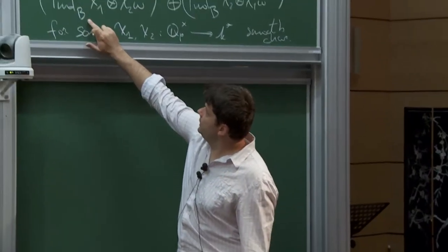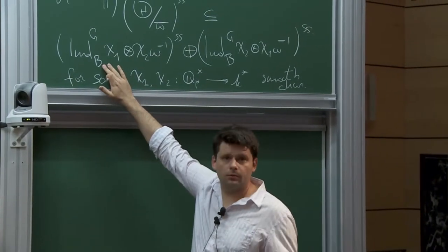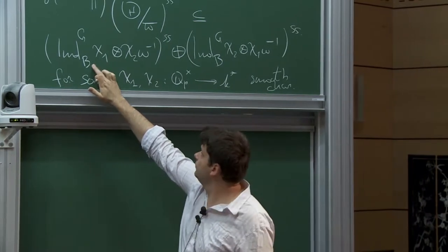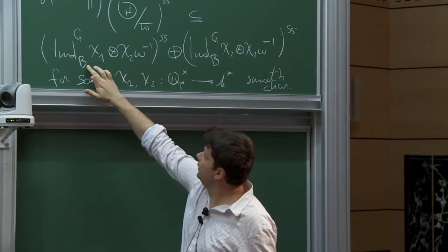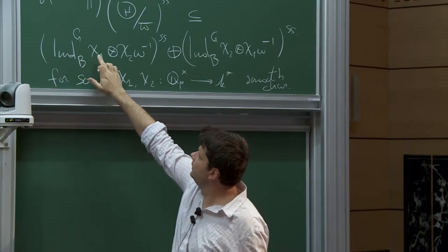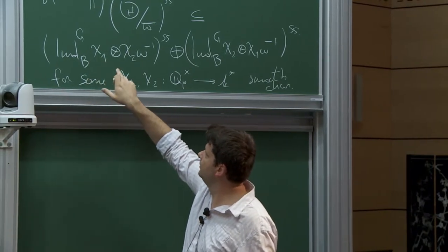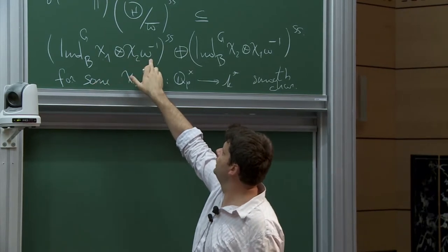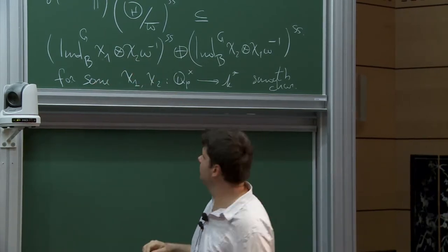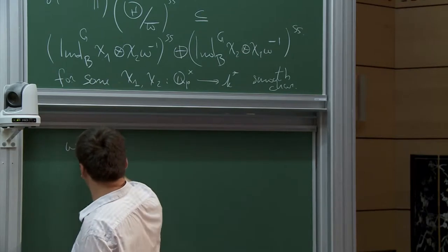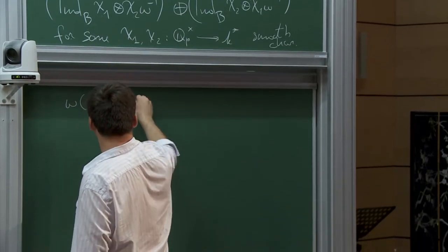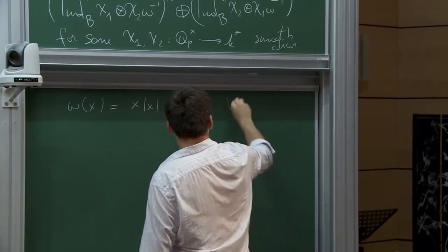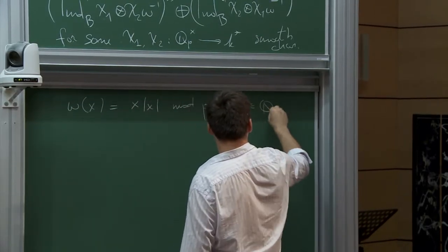This notation means I take a Borel — upper triangular matrices — and take a character of the Borel sending a matrix (a b; 0 d) to χ₁(a) · χ₂(d) · ω⁻¹(d), where ω(x) = x mod p for all x in Qp×. This is what I'd like to explain — how we prove this.